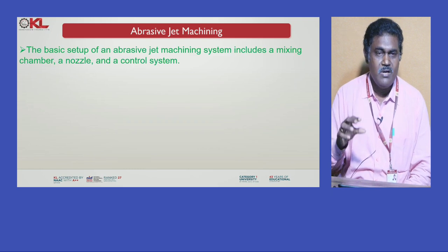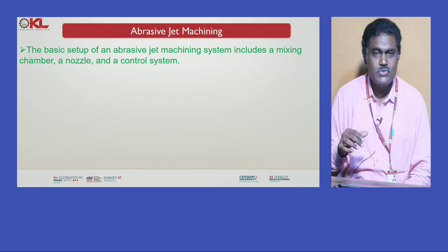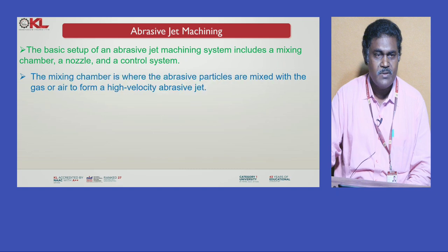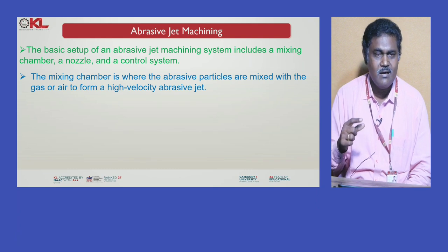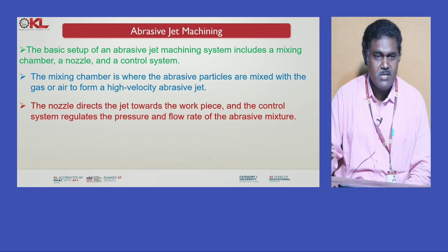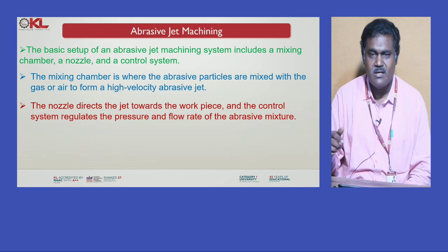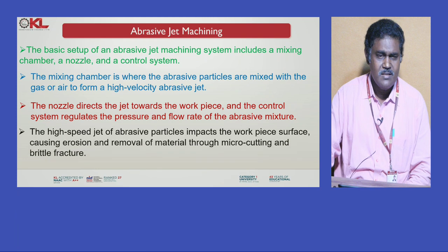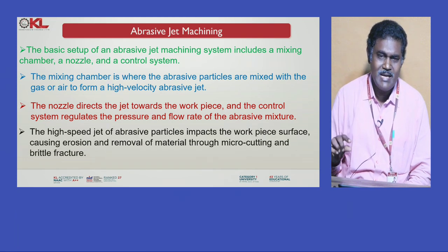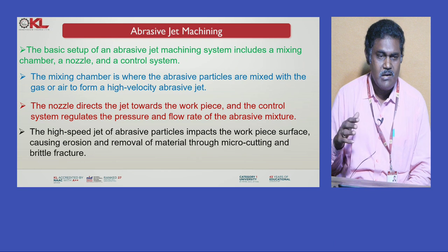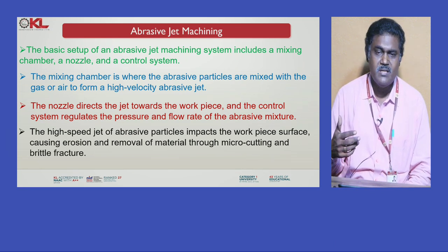The basic setup of an Abrasive Jet Machining system includes a mixing chamber, a nozzle, and a control system. The mixing chamber is where the abrasive particles are mixed with gas or air to form a high-velocity abrasive jet. The nozzle directs the jet towards the workpiece, and the control system regulates the pressure and flow rate of the abrasive mixture. The high-speed jet impacts the workpiece surface causing erosion and material removal through micro cutting and brittle fracture.